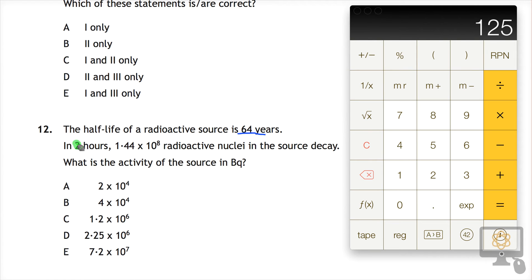It also says that in two hours, 1.44 times 10 to the 8 radioactive nuclei in the source decays. That's the number of decays that take place in two hours. What is the activity of the source?